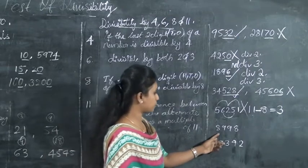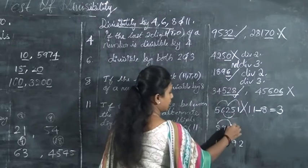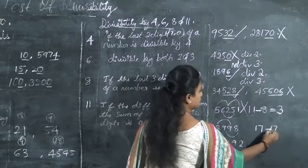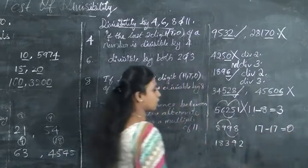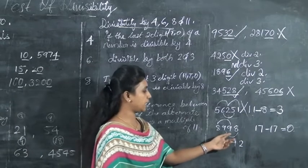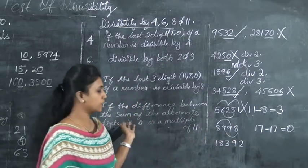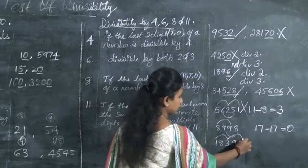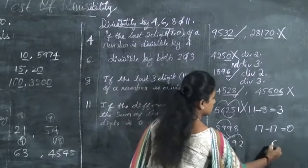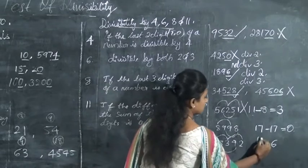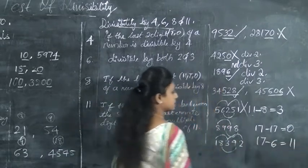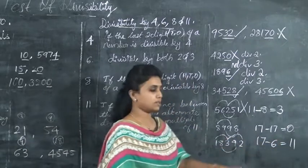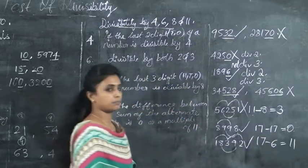Next example: find the sum of the alternate digits — 8 plus 9 is 17, and 9 plus 8 is 17. The difference is 0, so 8998 is divisible by 11. For the last example: 1 plus 3 is 4, plus 2 gives 6; and 8 plus 9 is 17. Wait — the alternate digit sums give a difference of 11, and since 11 is itself a multiple of 11, both conditions are satisfied. So these numbers are divisible by 11.